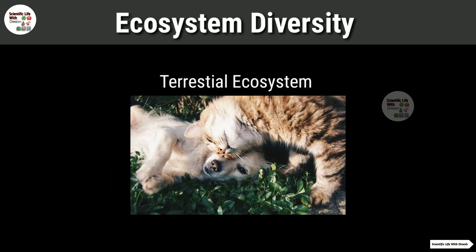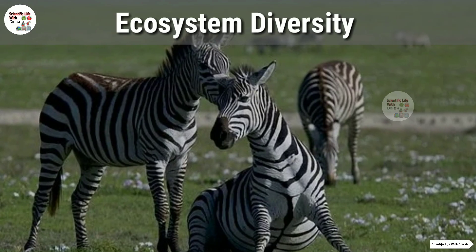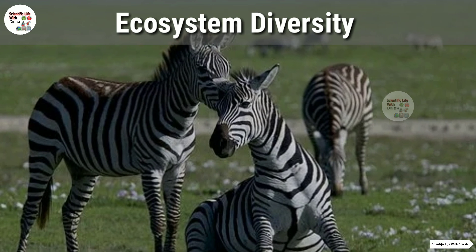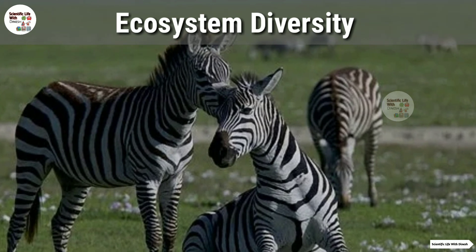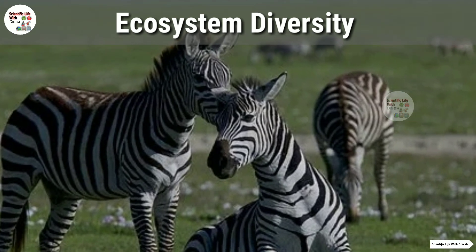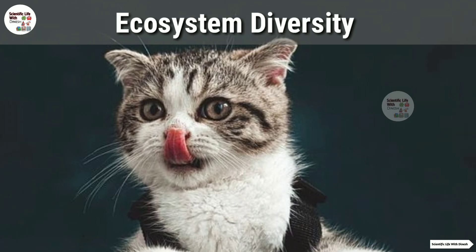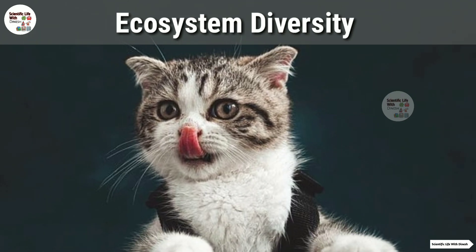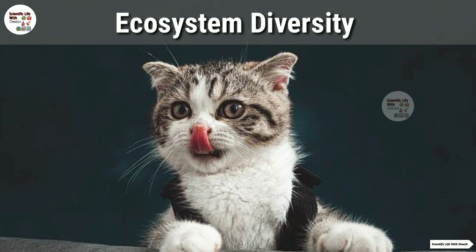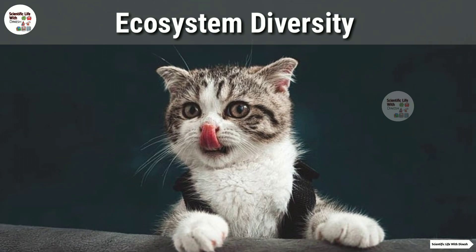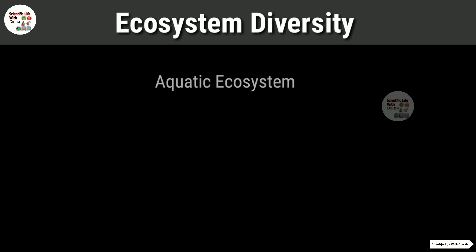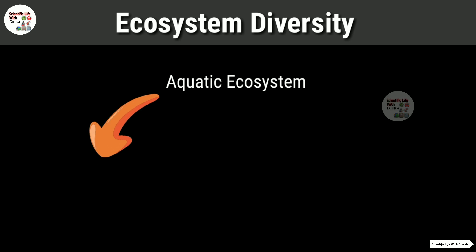Terrestrial ecosystems are those where organisms are connected to the land and they are interacting with life on land. Now let's talk about aquatic ecosystems.